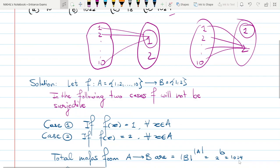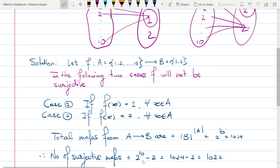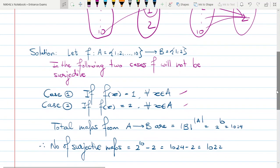2 to the power 10, it's a very simple computation. You can see it will come out to be 1024. Now I subtract, because I am looking for the number of surjective maps, out of the total number of maps, I subtract these two cases in which my map is not surjective.